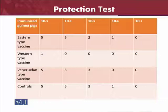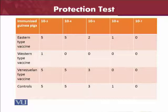However, at 10^6, the Eastern type vaccine produced a response of one and the control is also one, while Western type and Venezuelan type vaccines have not produced any kind of immunity. Therefore, it is very prominent from this that which vaccine is going to cause more protection and which is safer — and in this example, it is the Western type vaccine.